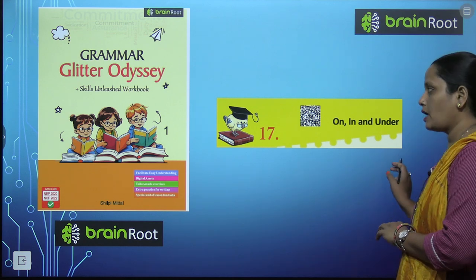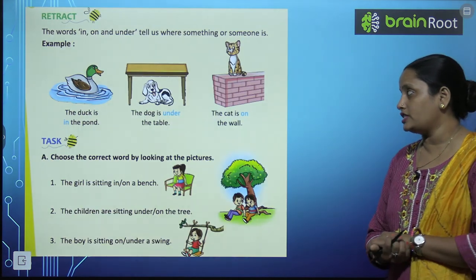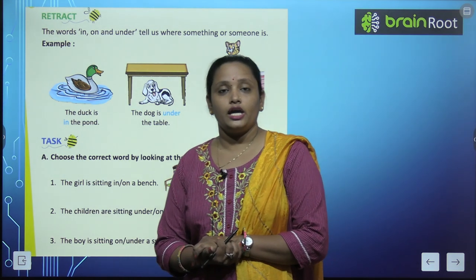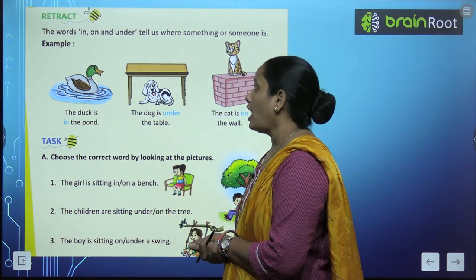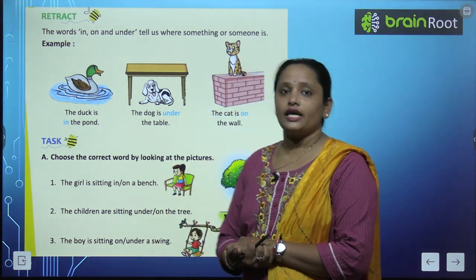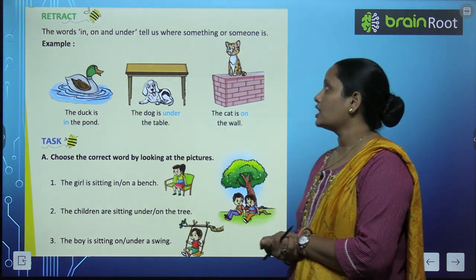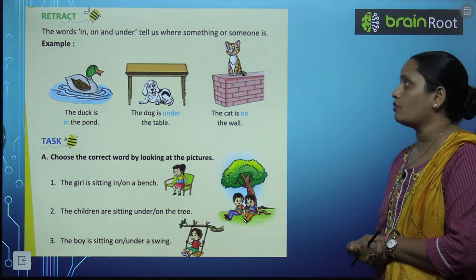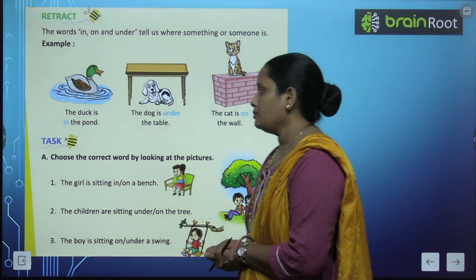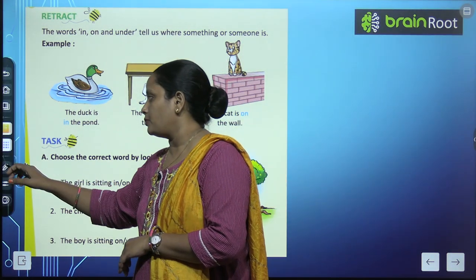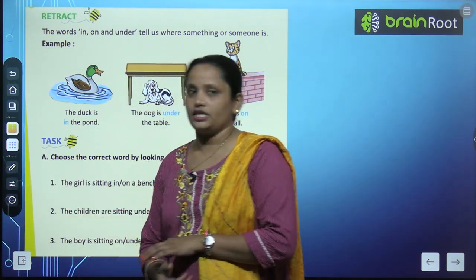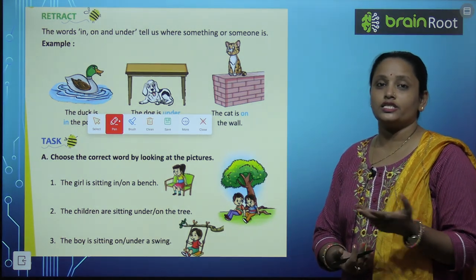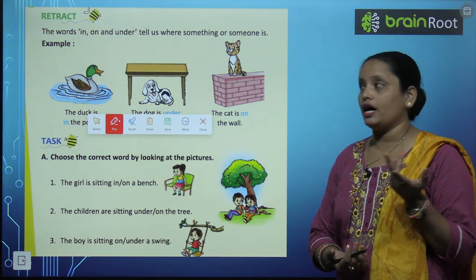So this is the chapter. Let's see where to use these words. The words in, on and under tell us the position where something or someone is. Kisi bhi cheez ki, kisi bhi person ki, kisi bhi thing ki position batati hai ki koi cheez kahan hai.